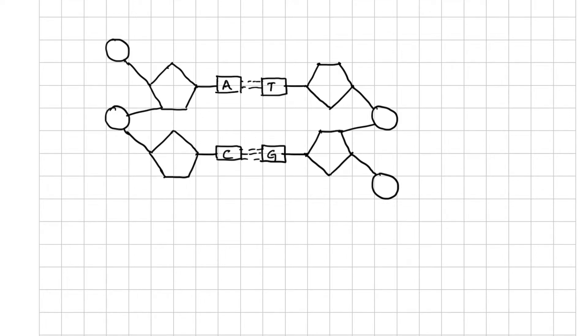As there are two bonds between A and T, mark the pentagon as pentose sugar, that is PS, and the circle as P for phosphate group. The part including the pentose sugar and the phosphate group is the sugar phosphate backbone.